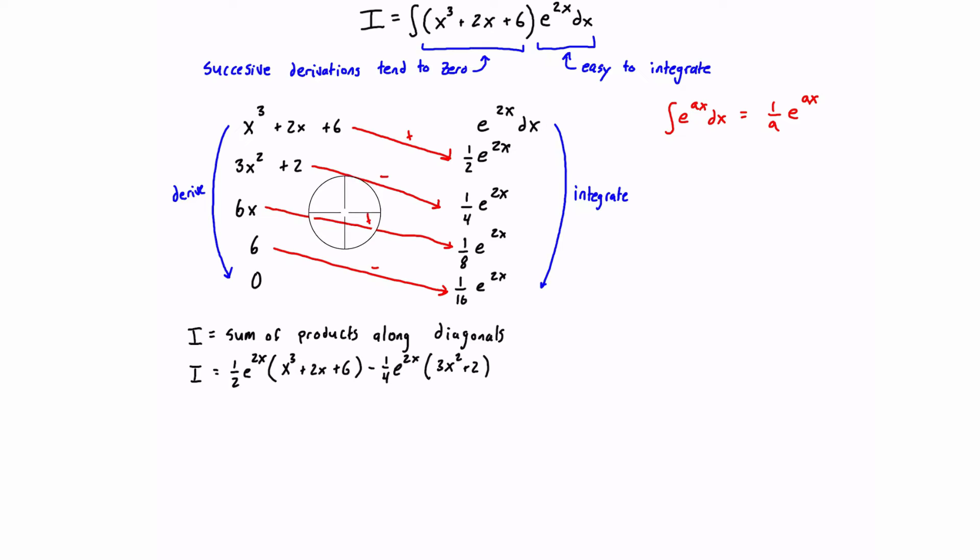For the next term, we're going to have a plus sign here. We're multiplying two positive quantities. So we will end up with a plus sign. So we will have plus 1/8 e^(2x) times 6x.